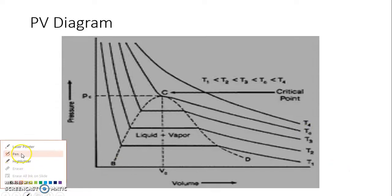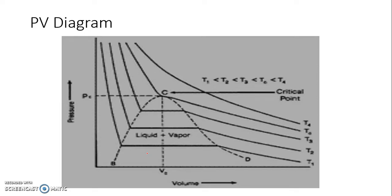Hello friends, in today's session we are going to discuss about the PV diagram. The PV diagram is available for all three regions — solid, liquid, and vapor — just like the PT diagram we discussed earlier. However, for all practical purposes, the PV diagram for vapor-liquid equilibrium is more useful, so we will restrict ourselves to the two-phase region: liquid and vapor.